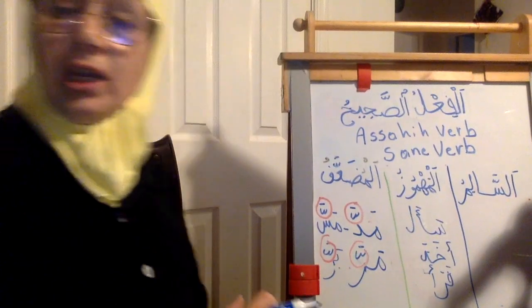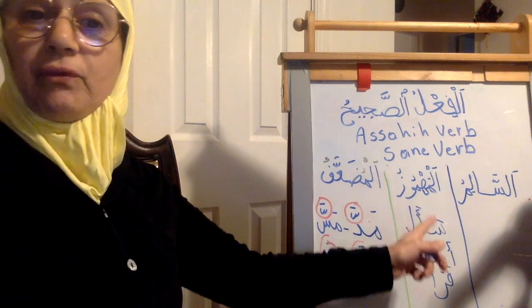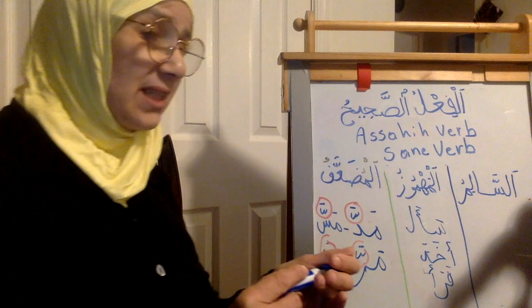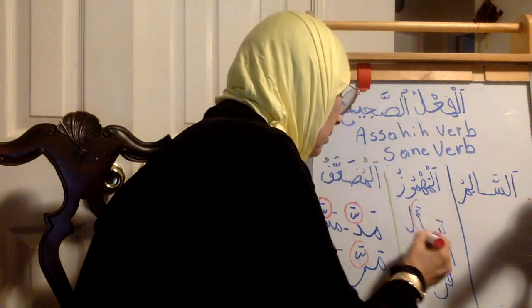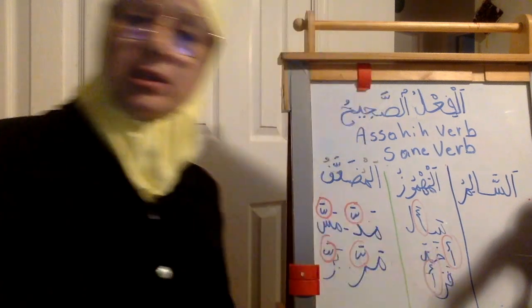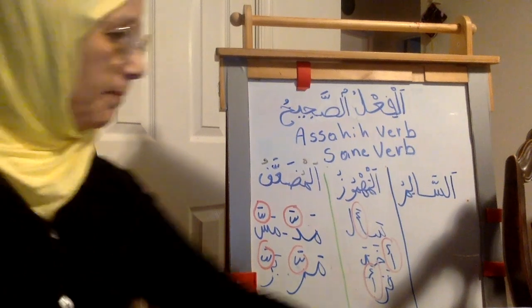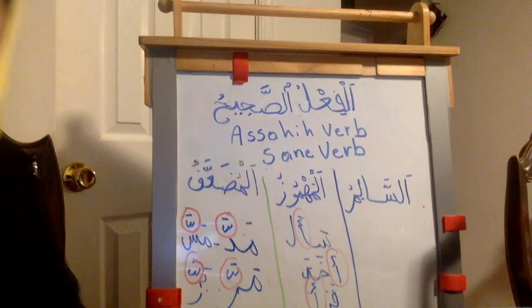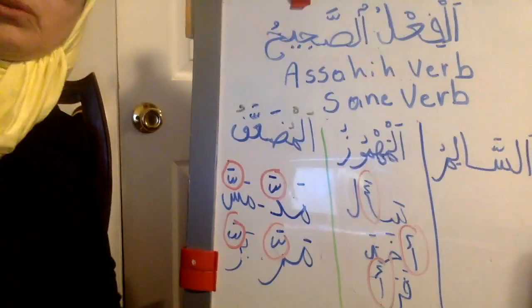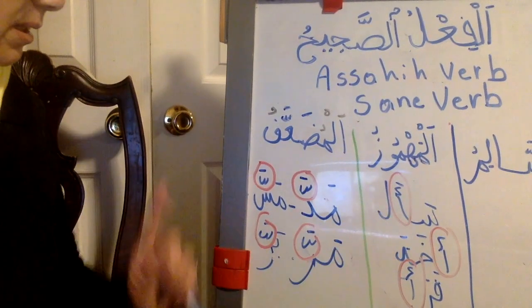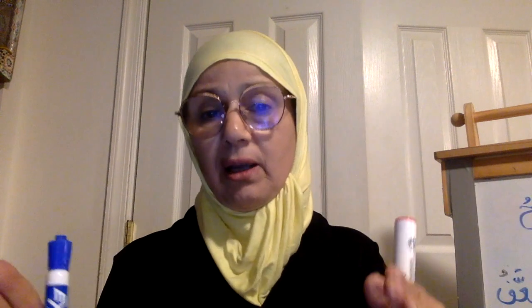Al-Mahmouz contains a hamza — let me circle the hamza in each example so you can see it clearly. Al-Salim has none of these: no hamza and no shadda. As-salim huwa ma salima minal hamzati wat-tad'if — Al-Salim is what is free of hamza and shadda. And Al-Muda'af, which we discussed today, is the verb that contains a Shadda — two letters merged into one.